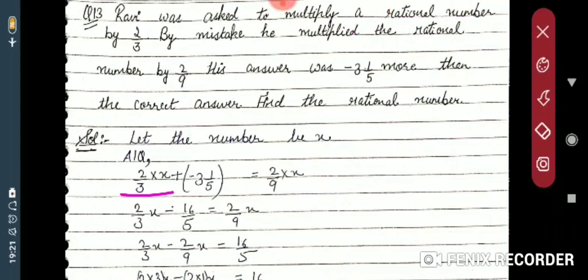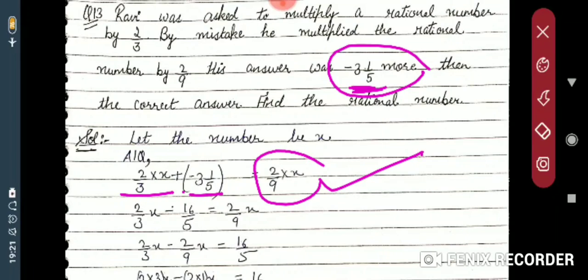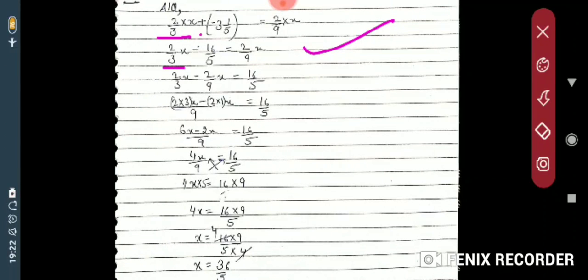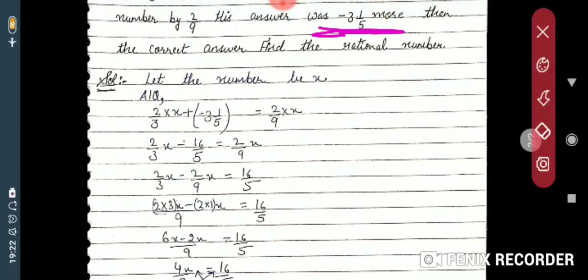The correct answer is (2/3)x. 'More' means addition, so his answer equals the correct answer plus the extra amount. Converting minus 3 and 1/5: that is minus 16/5. So the equation is: (2/9)x = (2/3)x + (−16/5). His answer by mistake was more than the correct answer by this amount.